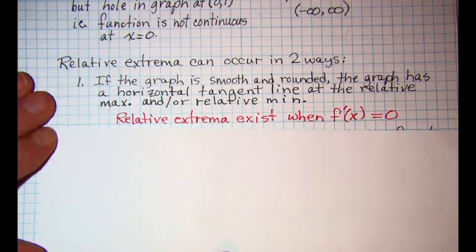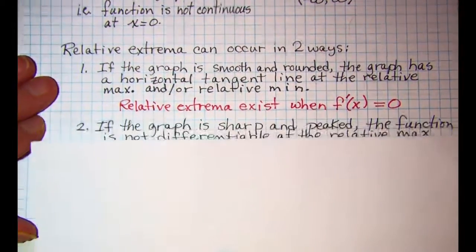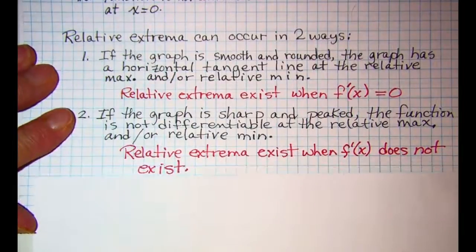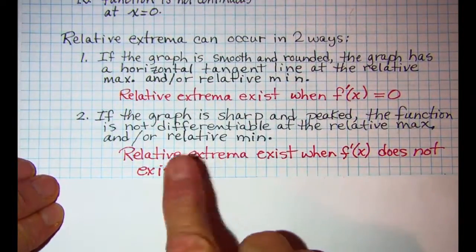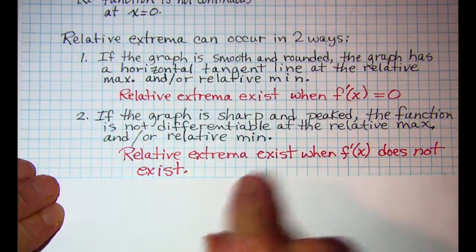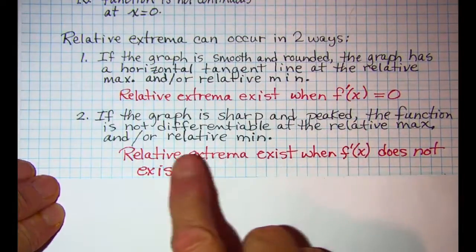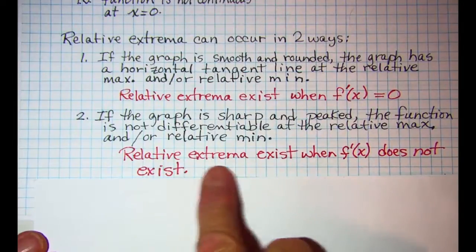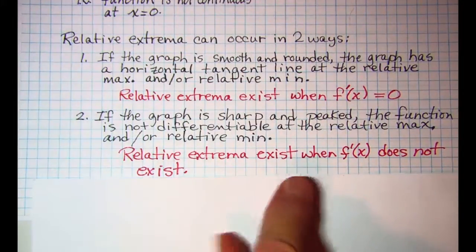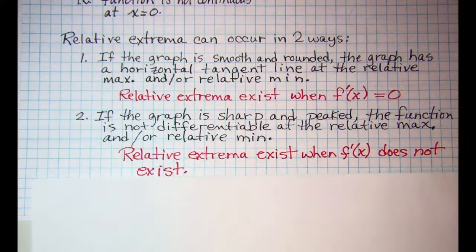The other way that relative extrema can occur is if the graph is sharp and pointed. In that case, the function is not differentiable at the relative max and/or min. So you'll have relative extrema when the derivative does not exist.